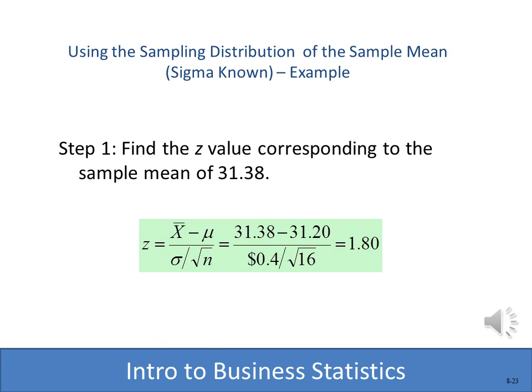Running through the numbers with X-bar, mu, sigma, and sample size n=16, we end up with a Z value of 1.8. Now we need to figure out what the probability of getting a Z of 1.8 actually is, to determine whether they're within the tolerances of the bottling machine.